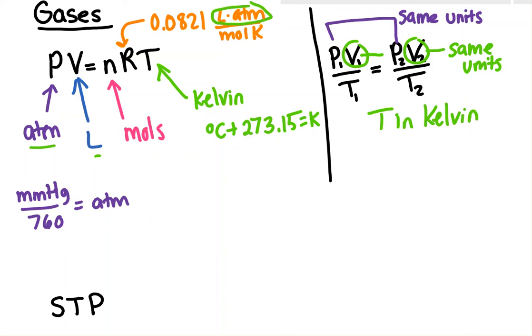So these two equations are very different. One is for a set situation, PV equals nRT, and then this combined gas law is for if you're doing something to the gas.